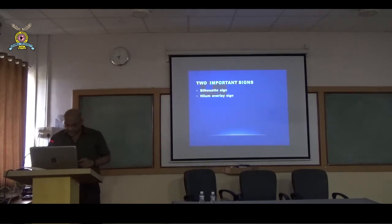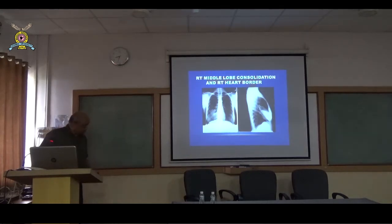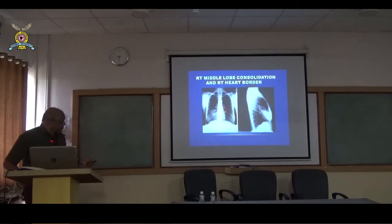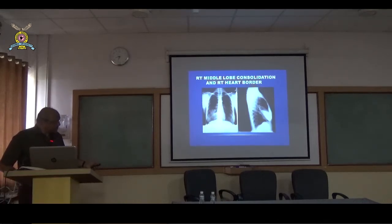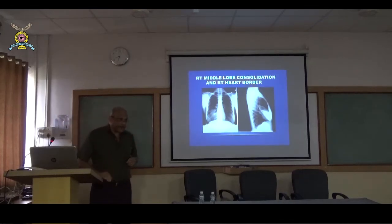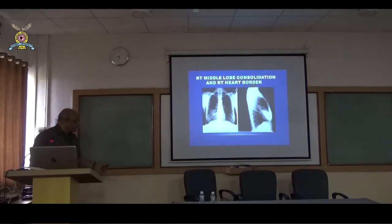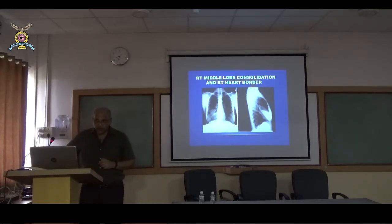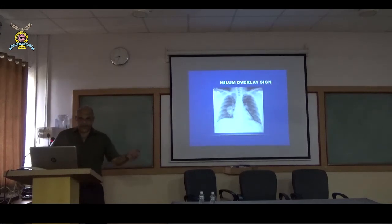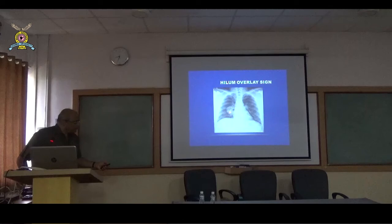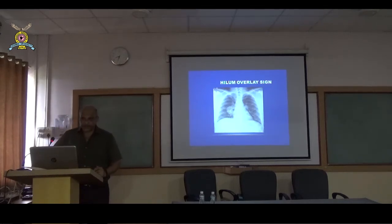From the lateral view, this is a typical collapse of the right middle lobe. This is the hilum overlay sign: if an opacity is located anterior or posterior to the blood vessels of the hilum, you will be able to see the hilar blood vessels. You can see the vessels going into the hilum clearly through this opacity in the right mid-zone extending into the right lower zone — so this is anterior or posterior to the hilum, and a lateral view is needed to determine the exact position.